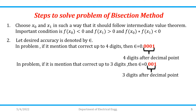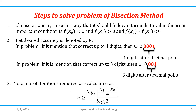Let desired accuracy be denoted by epsilon. If the problem says correct up to 4 decimal places, then epsilon = 0.0001. If correct up to 3 decimal places, then epsilon = 0.001. The total number of iterations required is given by: n ≥ log(|x1 − x0| / epsilon) / log(2), where log here means the natural logarithm (ln) when using a calculator.